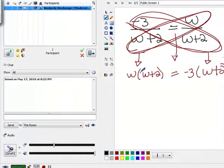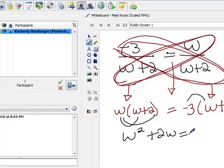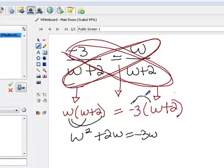So distributing the w here, we get w squared plus 2w. Distributing the negative 3, we get negative 3w minus 6.